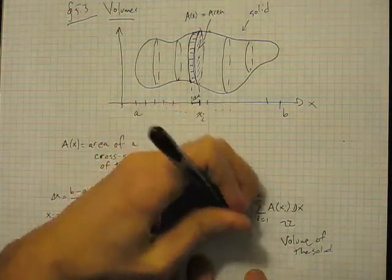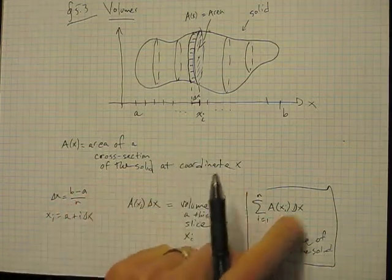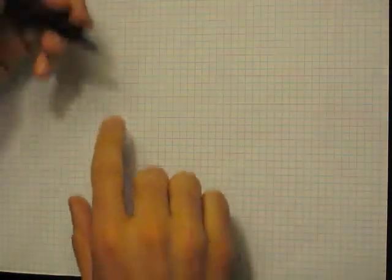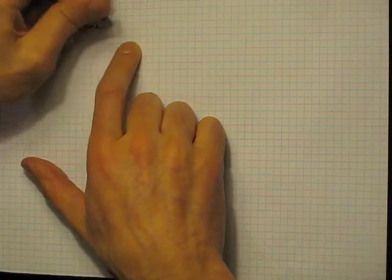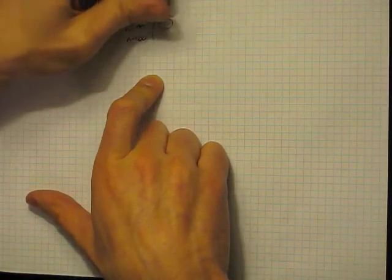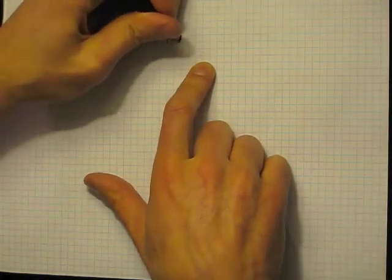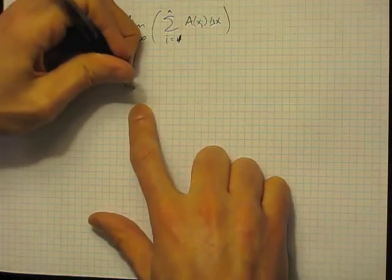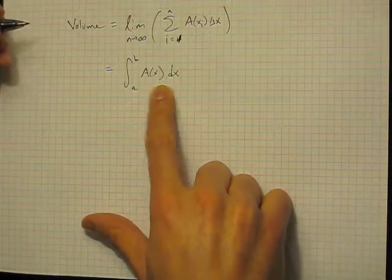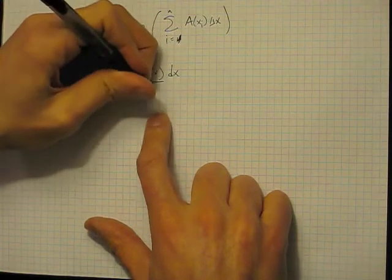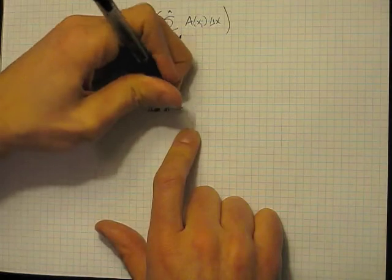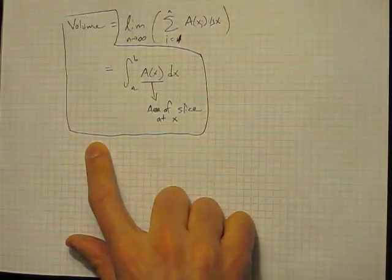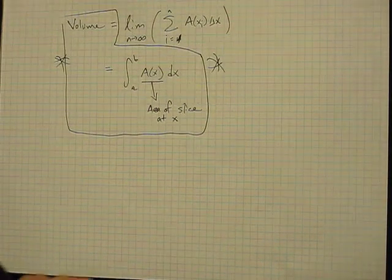By now, whenever you see a sum of n things with a Δx involved, you know what happens: we take the limit as n goes to infinity to get the actual volume. So the volume equals the limit as n→∞ of that Riemann sum, which is just the integral from a to b of A(x) dx — the area of the slice at x. This formula is very important and you will want to know it for the exam.